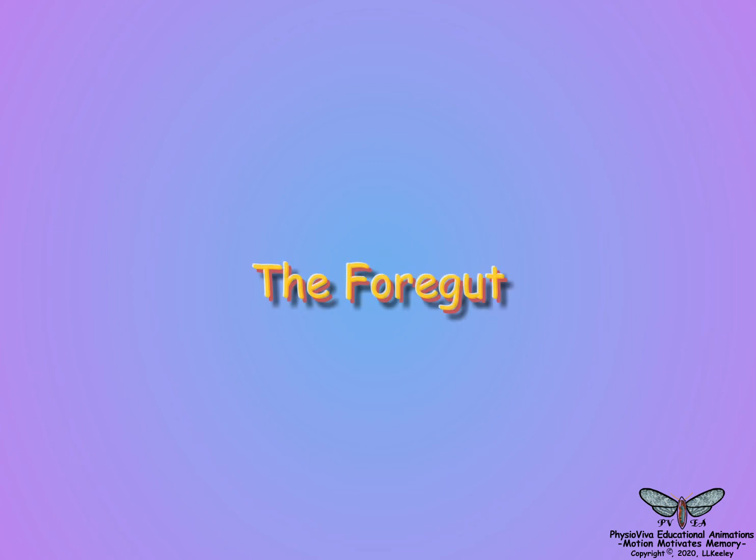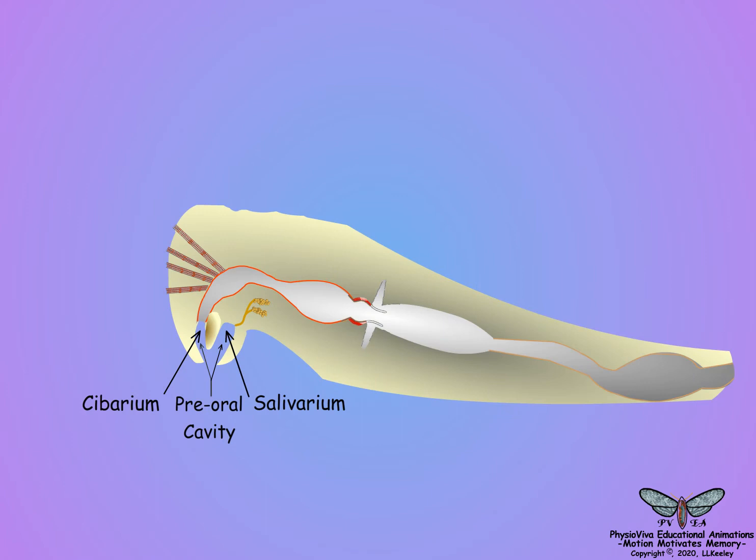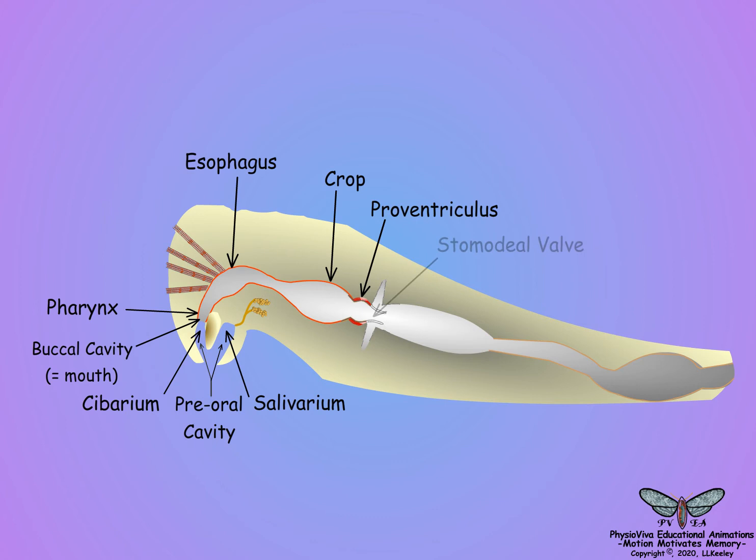This scene will describe the structures and functions of the typical insect foregut. Here is an overview of the foregut structure to show the pathway for food movement and digestion. Starting with the buccal cavity or mouth, the foregut consists of the pharynx, the esophagus, the crop, the proventriculus, and the stomadial valve that allows food passage from the foregut into the midgut.